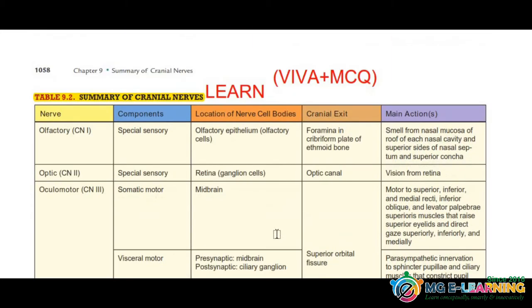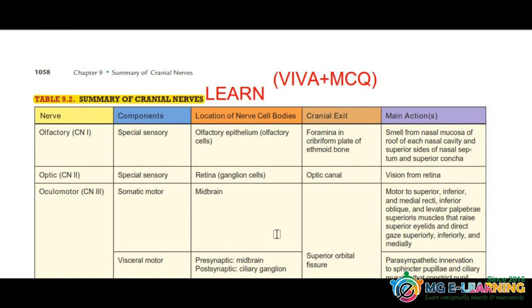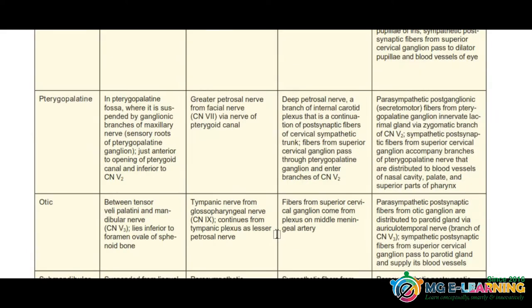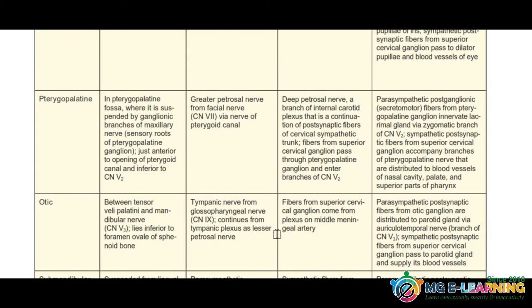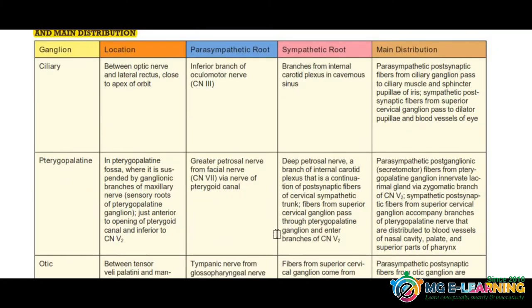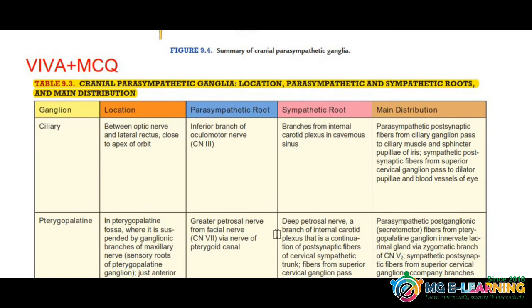You have to remember Table 9.2 — the exit points. They are very important for MCQs. After this table, we have to cover ganglions. Ganglions are important for MCQs. You have to see where the location of each ganglion is present.